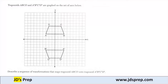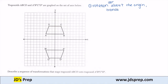There are a couple different ones that you can do. I'm going to map out one of them and then just tell you a couple other ways that you can find the sequence of transformations. So the first thing that you can do is a rotation 180 degrees about the origin, and then a translation two units down.